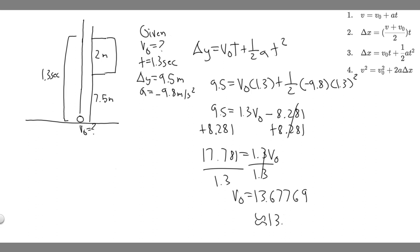So 13.7, and then the units are going to be meters per second, because that's what we measure velocity in. So 13.7 meters per second, that's going to be the ball's initial velocity.